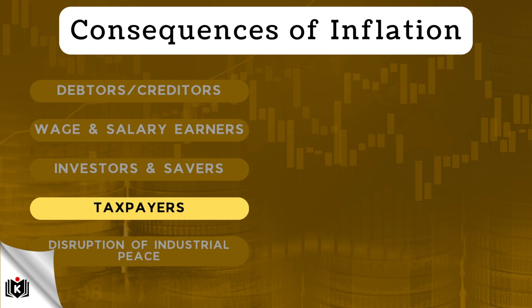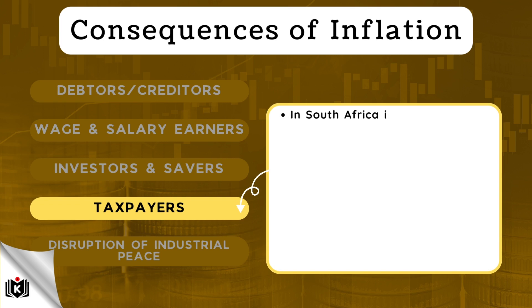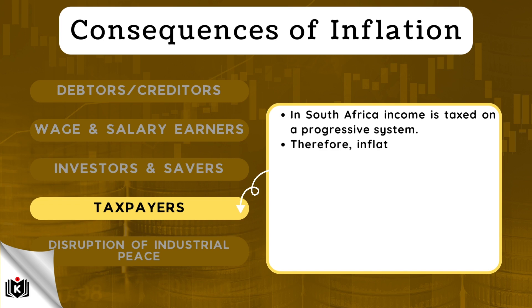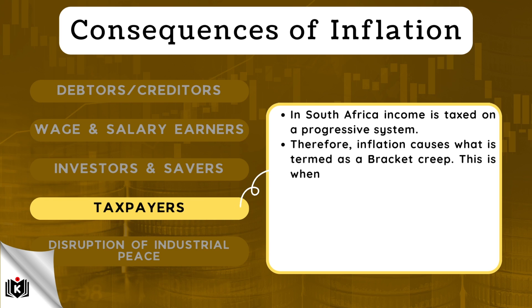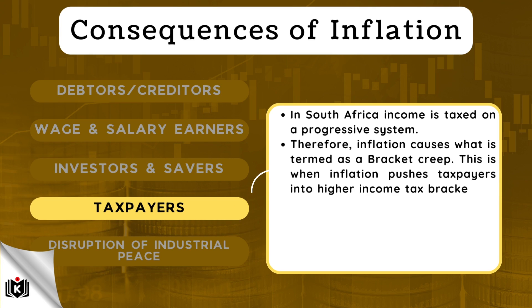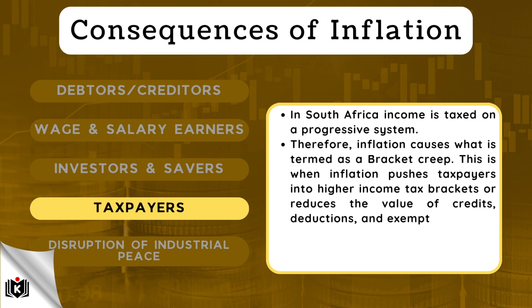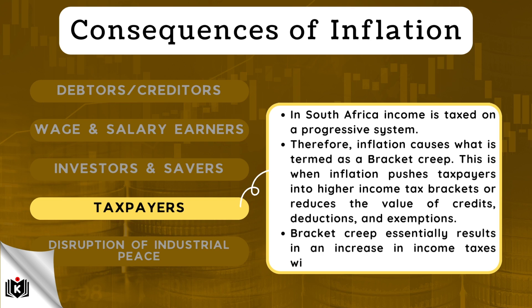Inflation also affects taxpayers. In South Africa, income is taxed on a progressive system. Therefore, inflation causes what is termed a bracket creep. This is when inflation pushes taxpayers into higher income tax brackets or reduces the value of credits, deductions, and exemptions. Bracket creep essentially results in an increase in income taxes without an increase in real income.